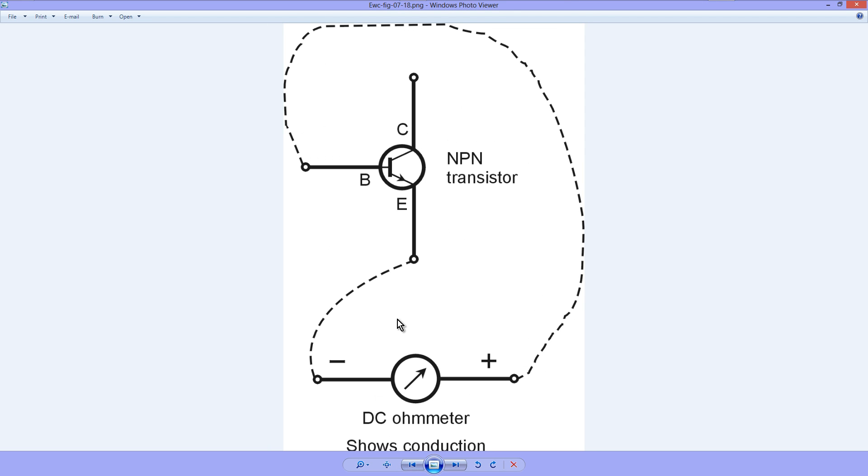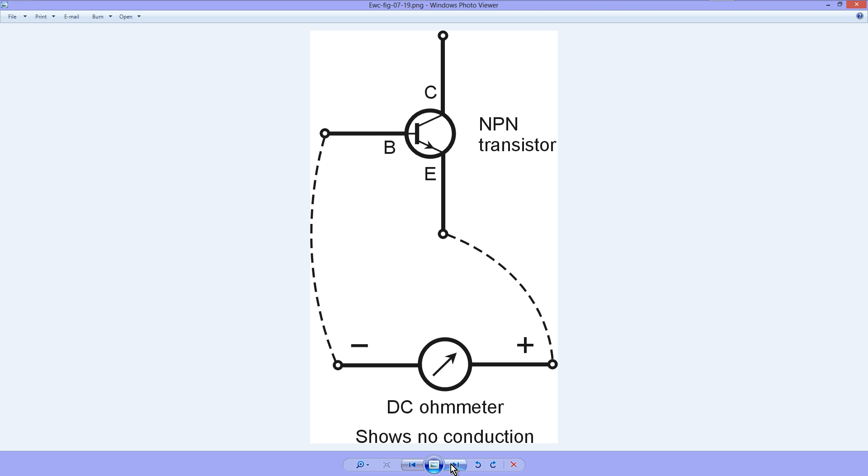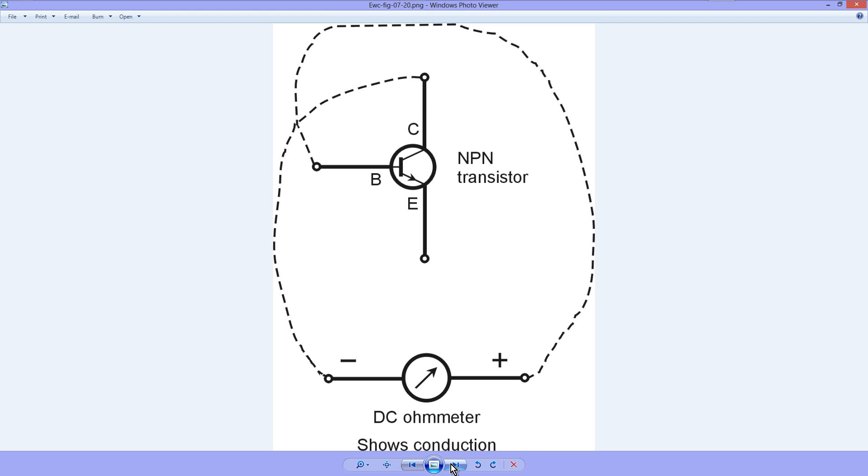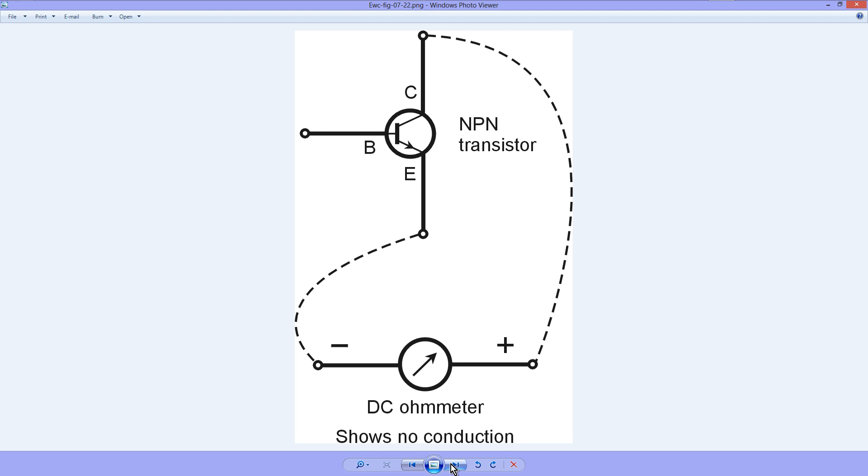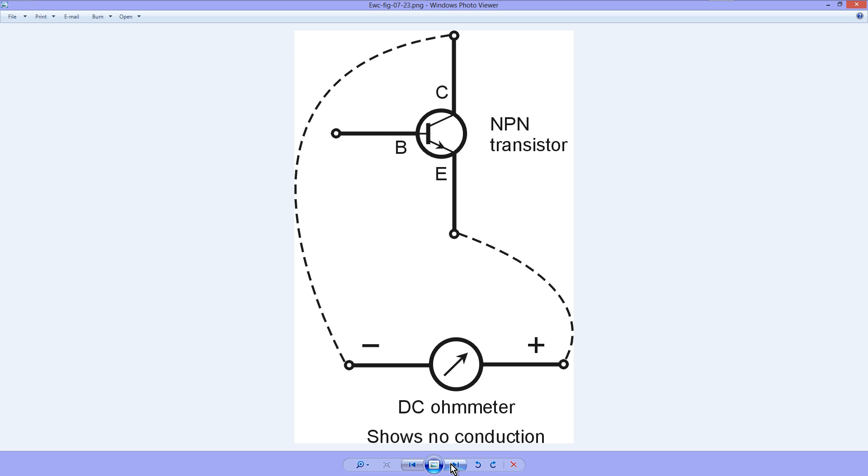I'm writing a new book by the way and these figures are from that book, the title of which I shall not at this time disclose. But you can tell it's figure 7-18. DC ohmmeter shows conduction from the emitter to the base, that's electron current, but not the other way around. Shows conduction from the collector to the base, electron current, but not the other way around. And won't conduct either way between the emitter and the collector.